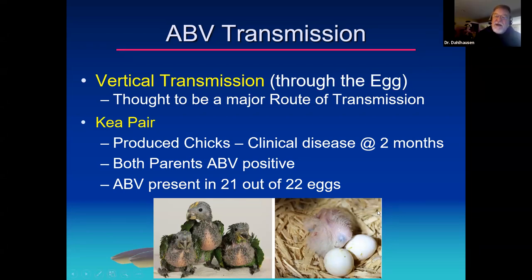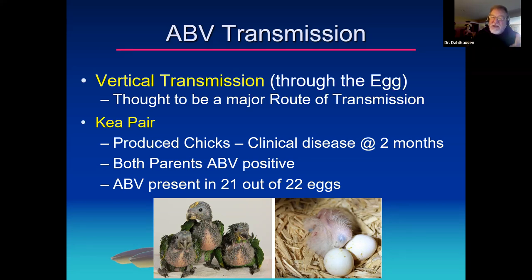Interestingly, embryos from those unhatched eggs did not have any lesions compatible with avian ganglioneuritis. That makes sense given the autoimmune nature of the disease — when chicks hatch, their immune system is not totally competent. It's around the time of weaning when the immune system becomes competent, and that's when we started to see disease showing up in these babies. It's a very important point to keep in mind.